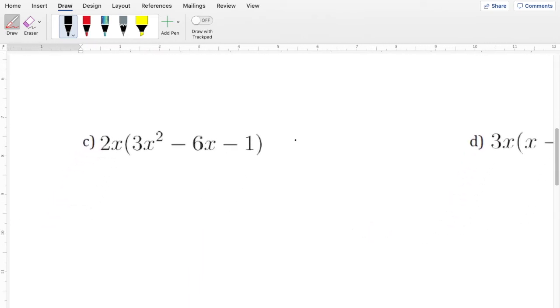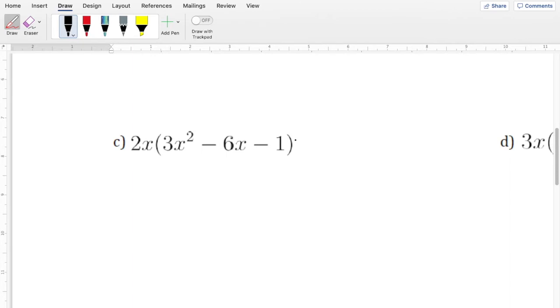Now this one's a little bit longer, but it's still the same process. So, 2x on the outside, so let's distribute that. And if we remember, if it's just an x, there's a 1 up here. So 2 times 3 is 6. Now we're multiplying exponents, multiplying variables here. So we're just going to add the exponents. So 1 plus 3 is going to be x to the power of 3. Sorry, so let's say x plus 1 plus 2.